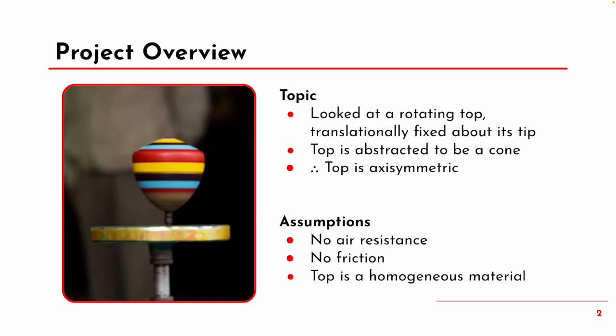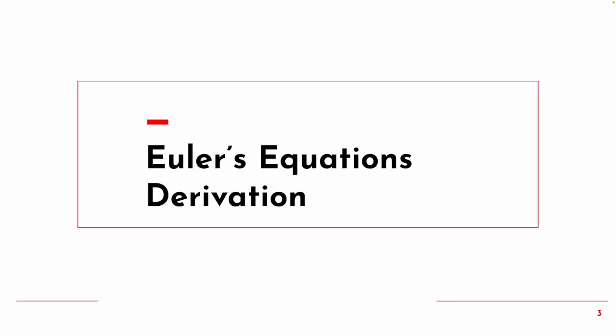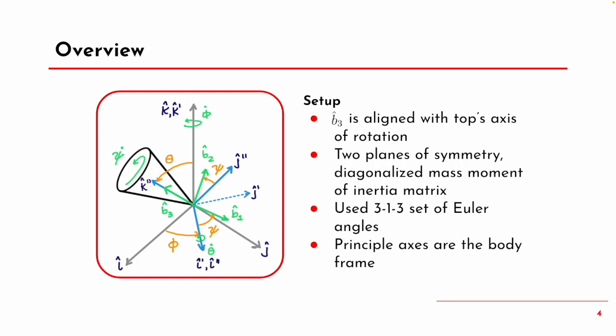For the project, we looked at a rotating top that was translationally fixed about its tip. The top was abstracted to be a cone and therefore was axially symmetric. The model assumed that there was no air resistance, no friction, and the top was one material. For the setup, we had a body frame that had B3 aligned with the top's axis of rotation, as seen in the figure to the left.